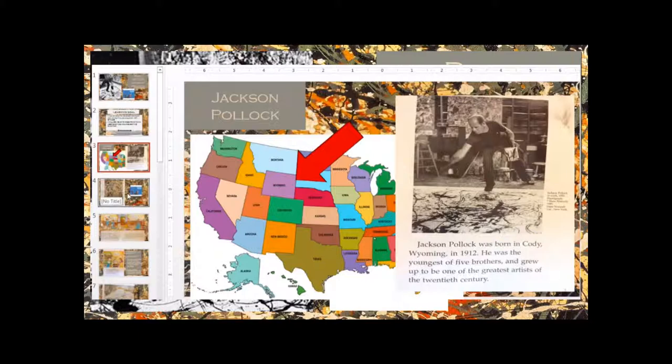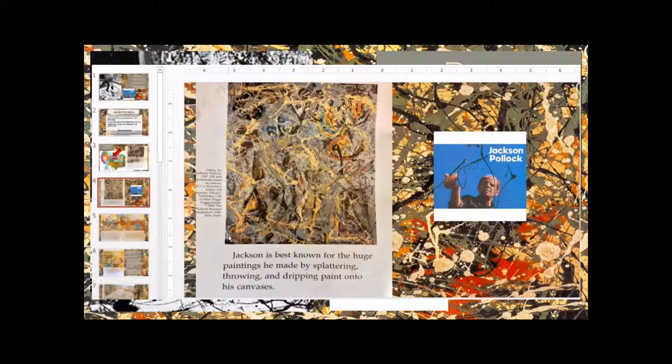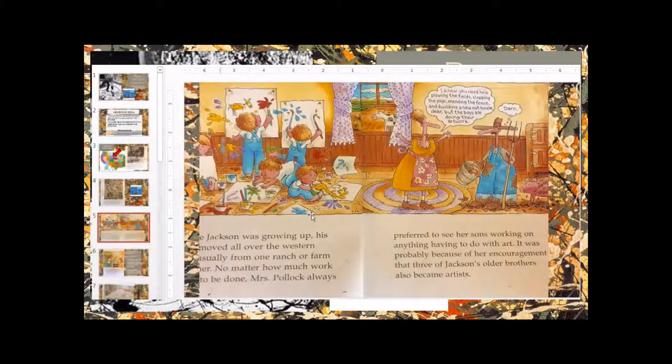All of these pictures, by the way, come from Getting to Know the World's Greatest Artist, written and illustrated by Mike Venenzia. Jackson Pollock is best known for the huge paintings that he made by splattering, throwing, and dripping paint onto his canvases. This is one of his paintings called Galaxy, which he painted in 1947.